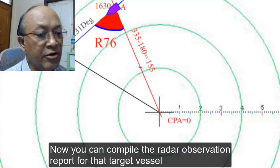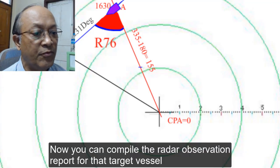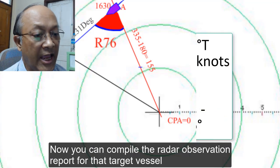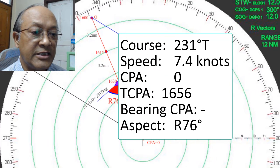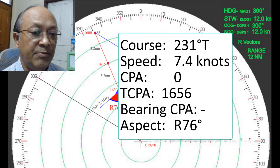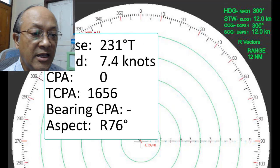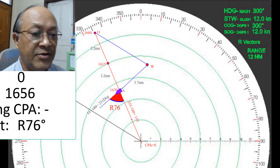Now you can compile the radar observation report for the target vessel as: course 231 degrees true, speed 7.4 knots, CPA 0, TCPA 1656, and aspect R76 degrees.